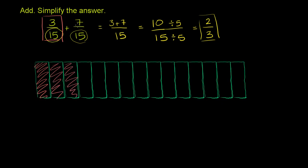Now to that, we're adding seven of the 1/15 sections, or seven of the sections. So we're adding seven of those to it. So that's 1, 2, 3, 4, 5, 6, 7.